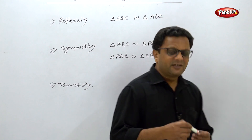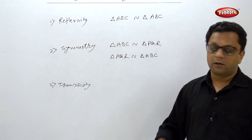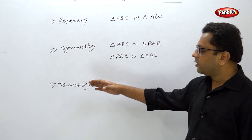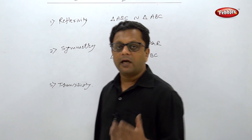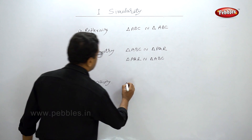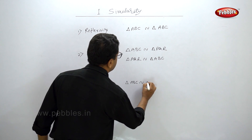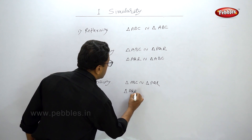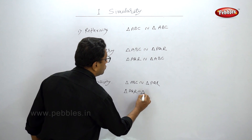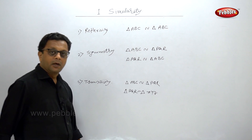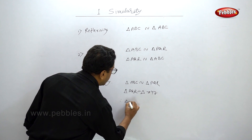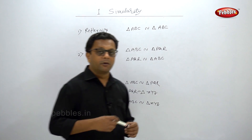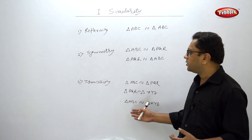The third property is transitivity. This is like algebra: if A = B and B = C, then A = C. Similarly, if triangle ABC is similar to triangle PQR, and triangle PQR is similar to triangle XYZ, then triangle ABC is similar to triangle XYZ. This is what we call transitivity.